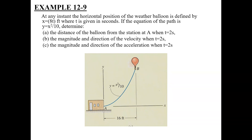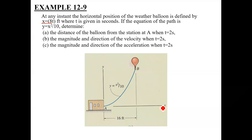You have a particle which is this balloon, and this balloon is moving along a curved path as shown in the figure. At any instant, the horizontal position of this balloon is defined by x equal to 8t. So x is defined as a function of time, which is x = 8t.